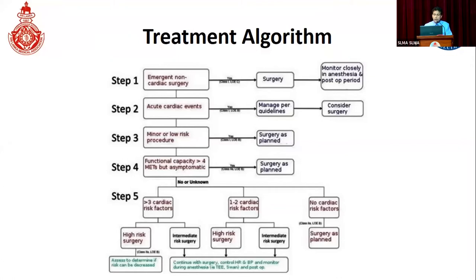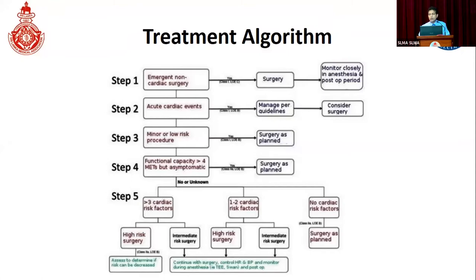If the patient has an ongoing acute cardiac event like myocardial infarction, decompensated heart failure, significant arrhythmia, or hemodynamically compromised valvular lesions, we have to manage those conditions per guidelines and then consider surgery if they can wait for treatment. If the risk is minor and the patient has low risk going for low-risk surgery, no further evaluation is needed and they can proceed. Otherwise, we can assess functional capacity, and if METS are more than four and the patient is asymptomatic, we can consider them for surgery.